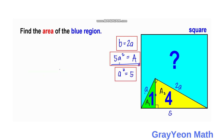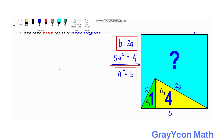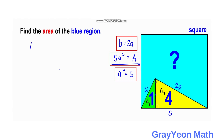Now to find the area of the square: area equals 5a squared, and we have a squared equals five, so five times five gives us the area of the whole square as 25 square units.